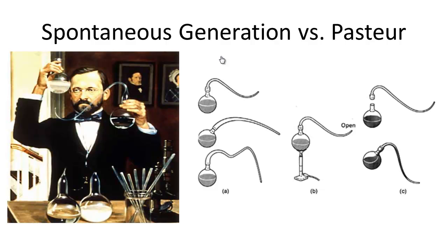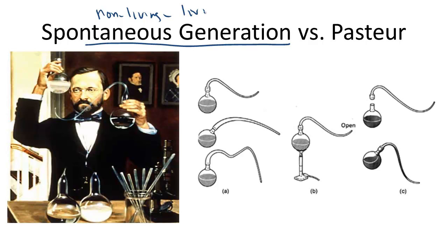As you learned in our previous video on Francisco Redi and Spontaneous Generation, Spontaneous Generation is the belief that living things come from non-living things. Francisco Redi proposed that living things only come from living things, and had a very famous experiment with the flies and the meat.